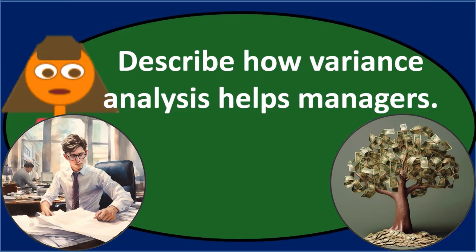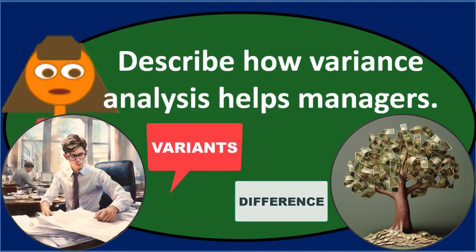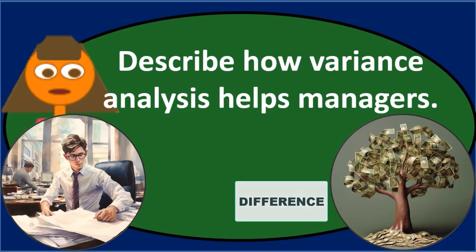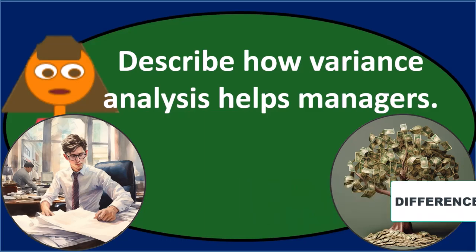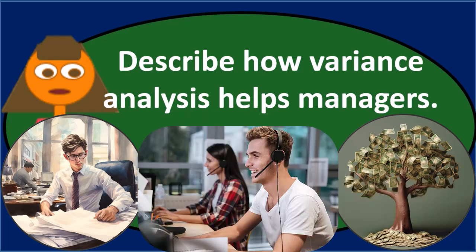To compare the standards with actual results — variance is another word for the difference. We look at the difference between the standard or budgeted numbers and what actually happened. That difference, called the variance, may be favorable or unfavorable, and we'll typically list them as either favorable or unfavorable, then make changes going forward as we see fit.